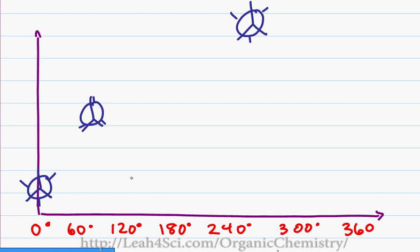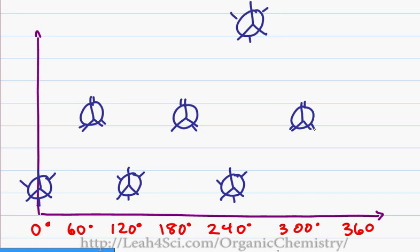One eighty back to the eclipsed conformation. Two hundred forty, again staggered. Three hundred again eclipsed. And three sixty or zero degrees brings me back to the staggered conformation we started with.